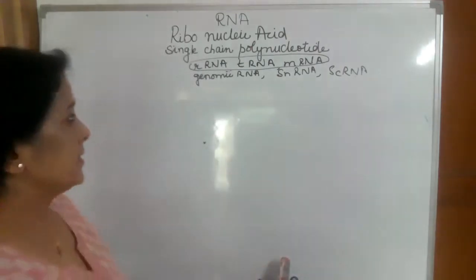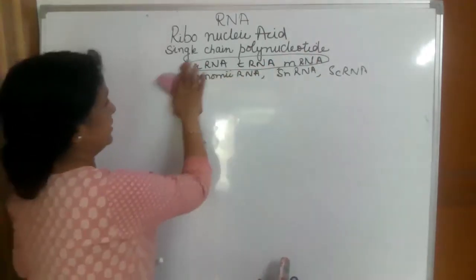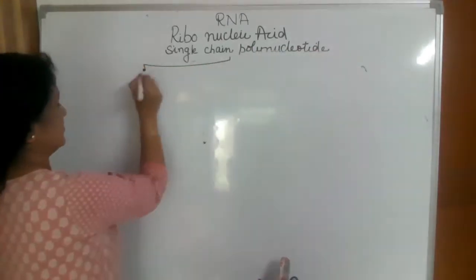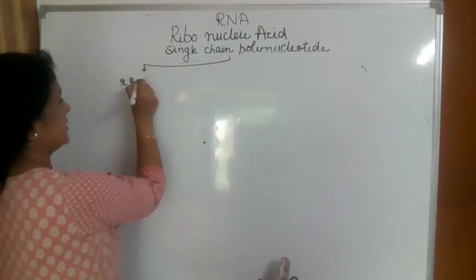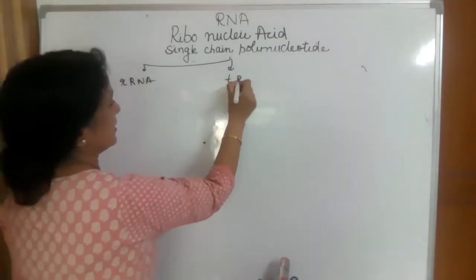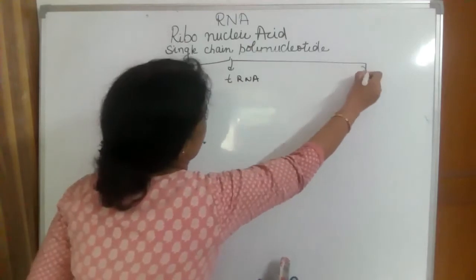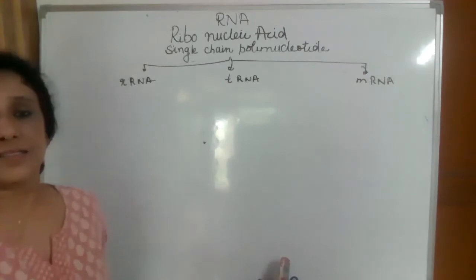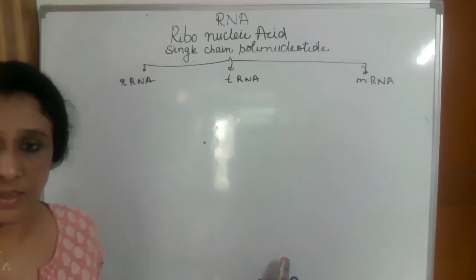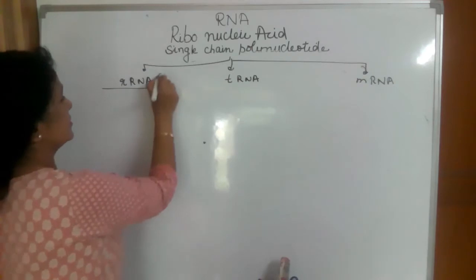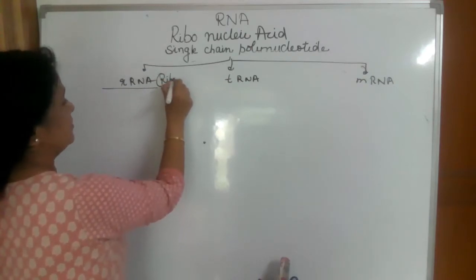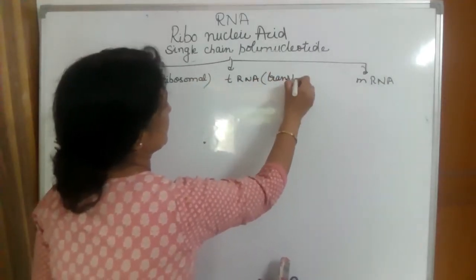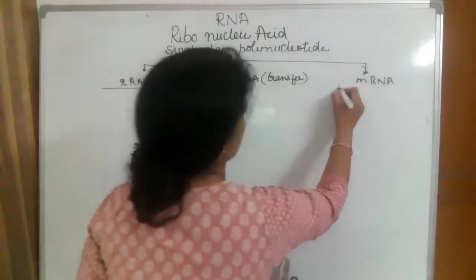Now let us study these three different types of RNA. Let us first study rRNA, then tRNA and mRNA. R stands for ribosomal, T stands for transfer, and M stands for messenger RNA. These are the three types which are involved in protein formation.